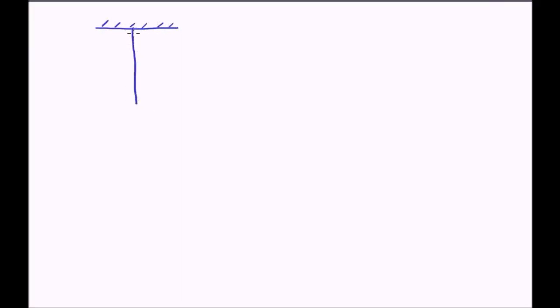Let us see the conservation of mechanical energy using the example of a simple pendulum. A simple pendulum is basically a bob hanging via a thread. The thread is supposed to be massless, and a mass m is at the other end — this is called the bob. The thread is massless and the whole mass is concentrated at the bob.